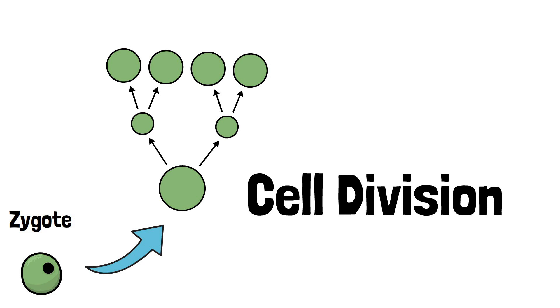This means one cell forms two new cells, which further form four new cells, and thus the cycle continues. This process of formation of new cells is called cell division.